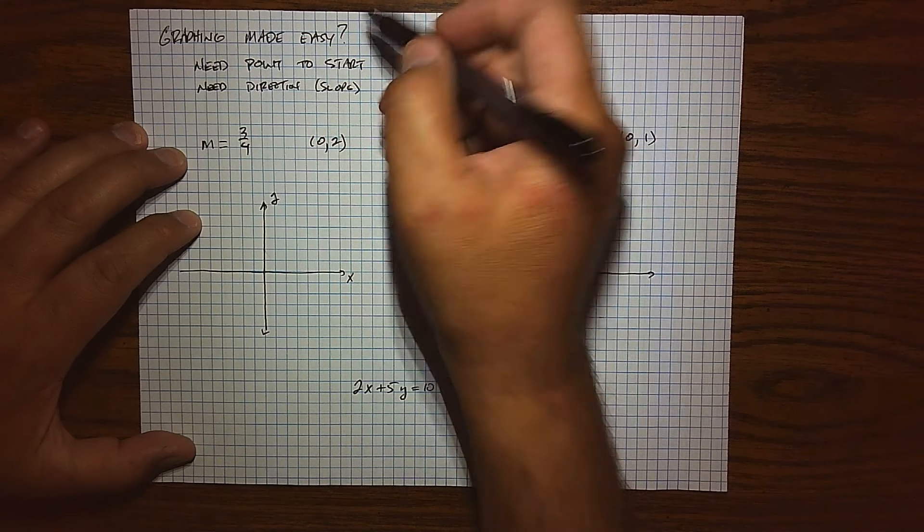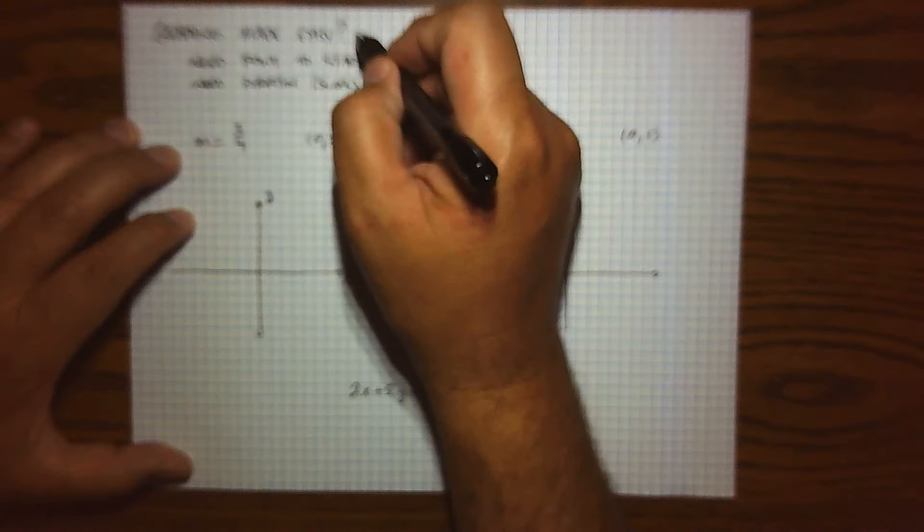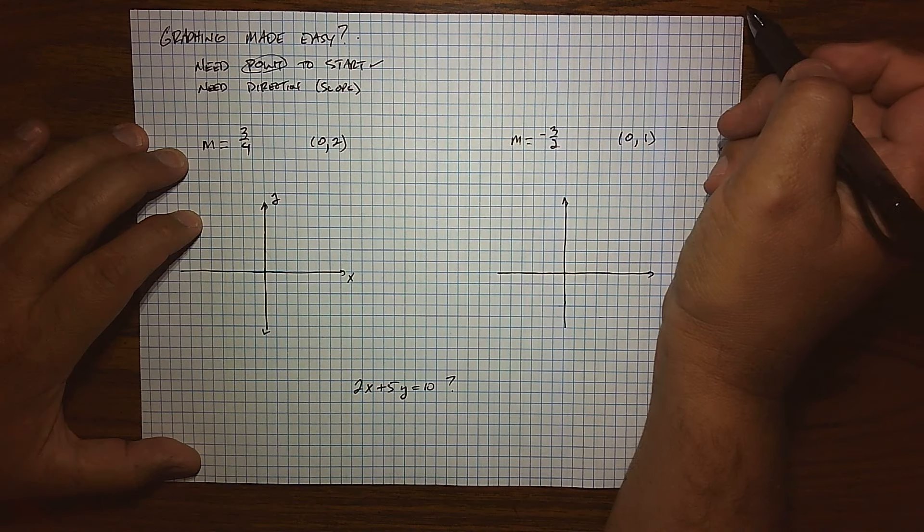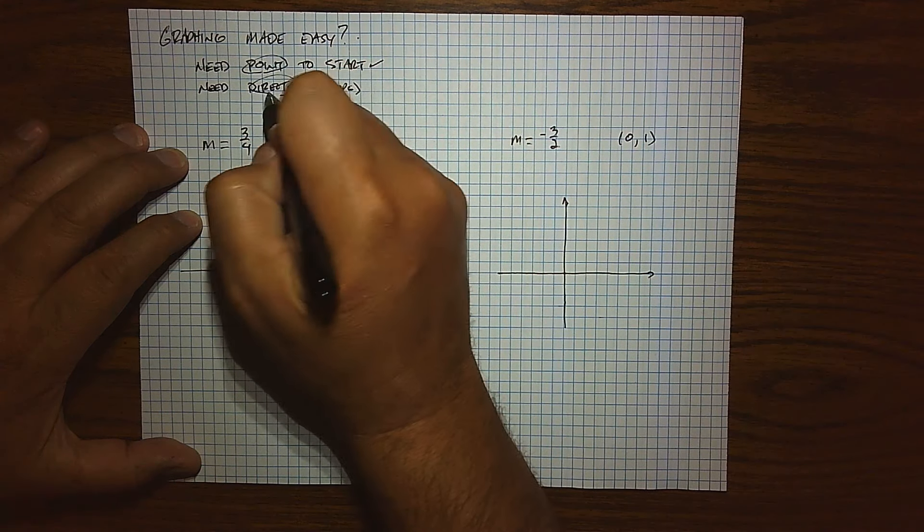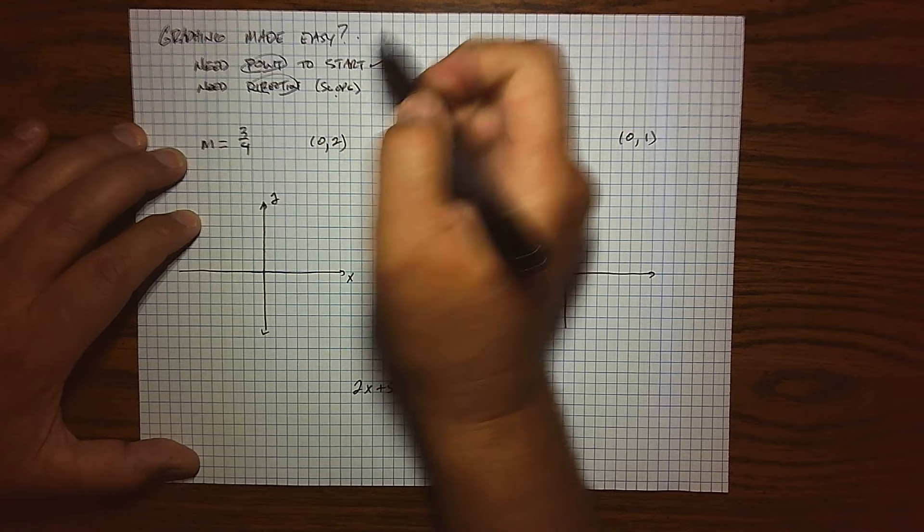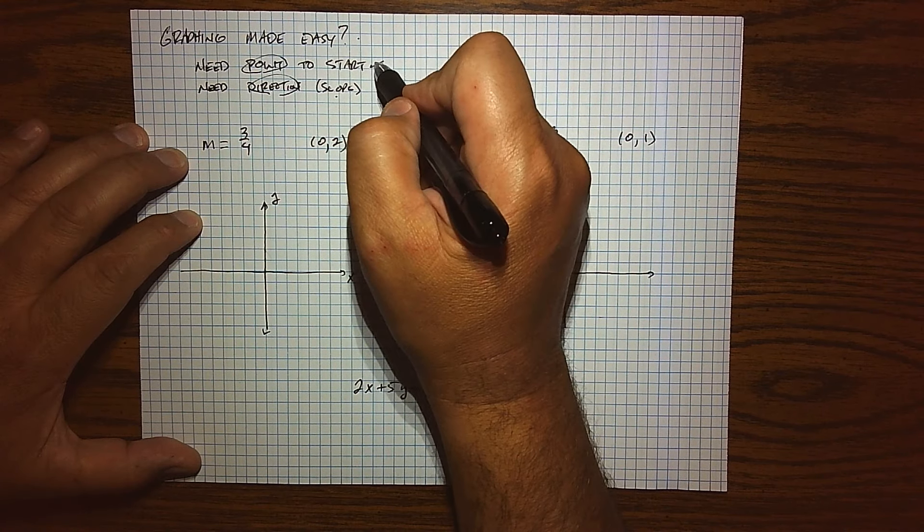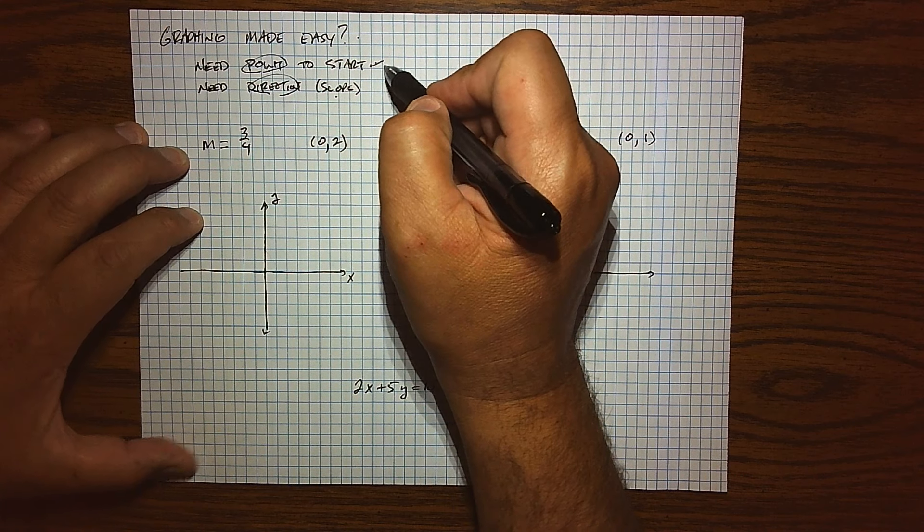For starters, to make graphing easier, I need two pieces of information. I need a point that basically tells me where to start, and then I need direction, right? That's what slope is. And that basically tells me how to move. So from this point, which direction do you want me to move?